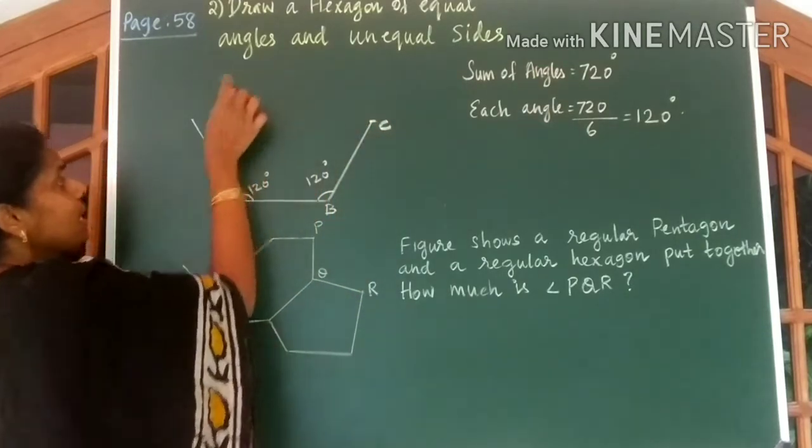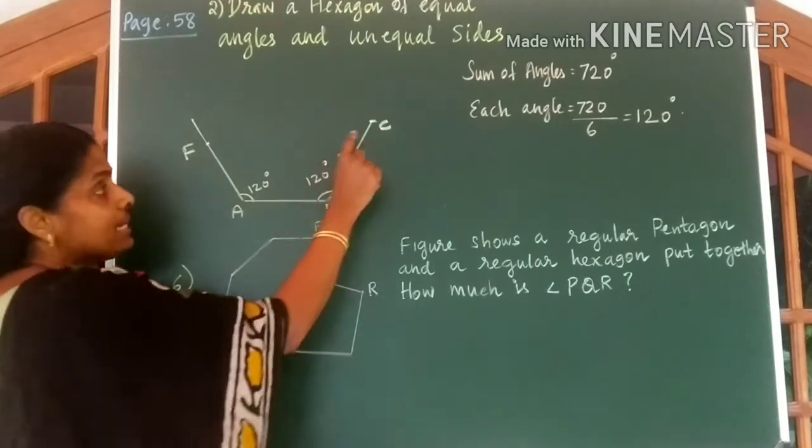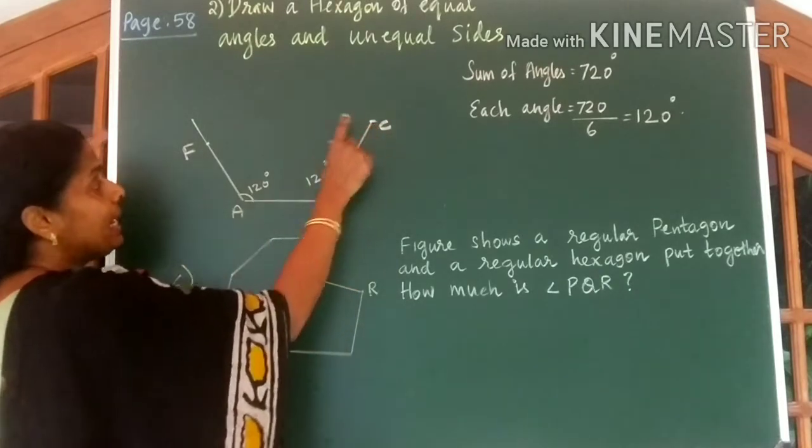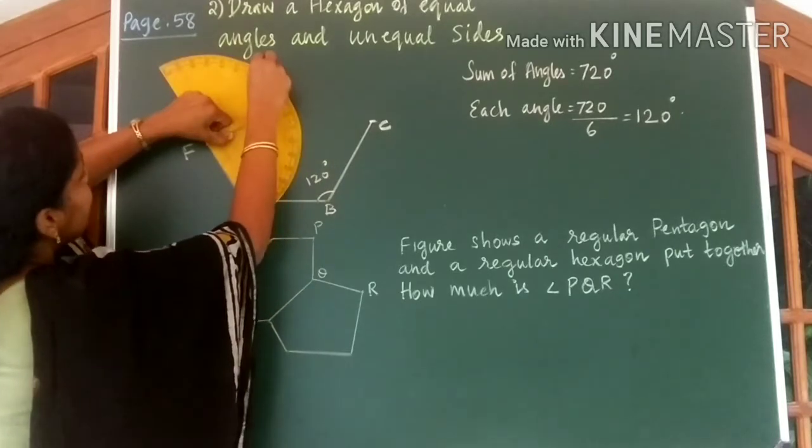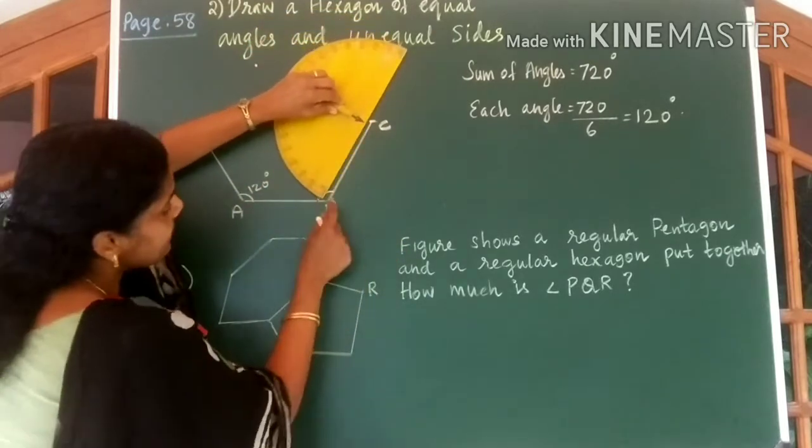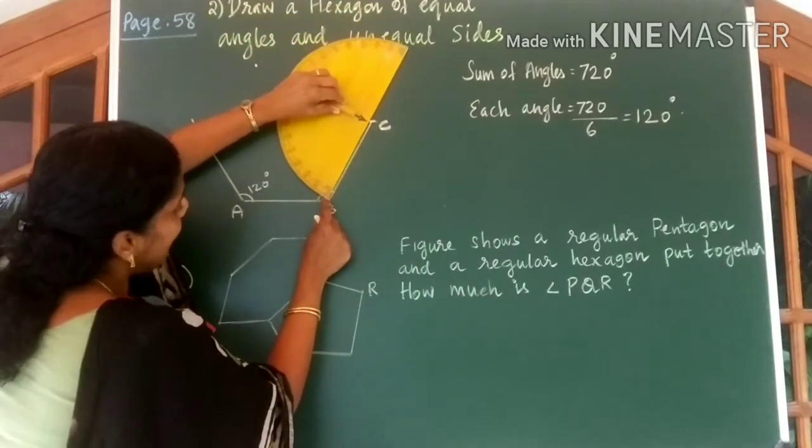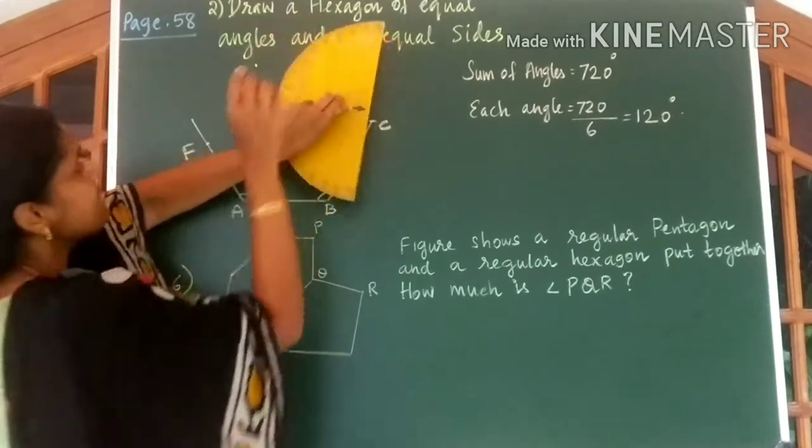D, E. So this point is going to be F. Now measure 120 degrees at these two points. So you get 120 degrees. Now keep your protractor at the point C and measure 120 degrees. So 120 degrees is here.